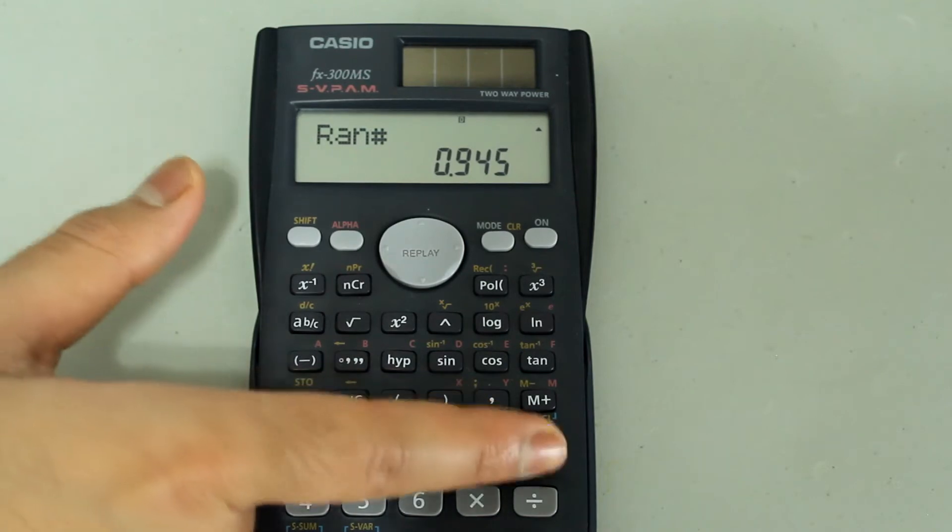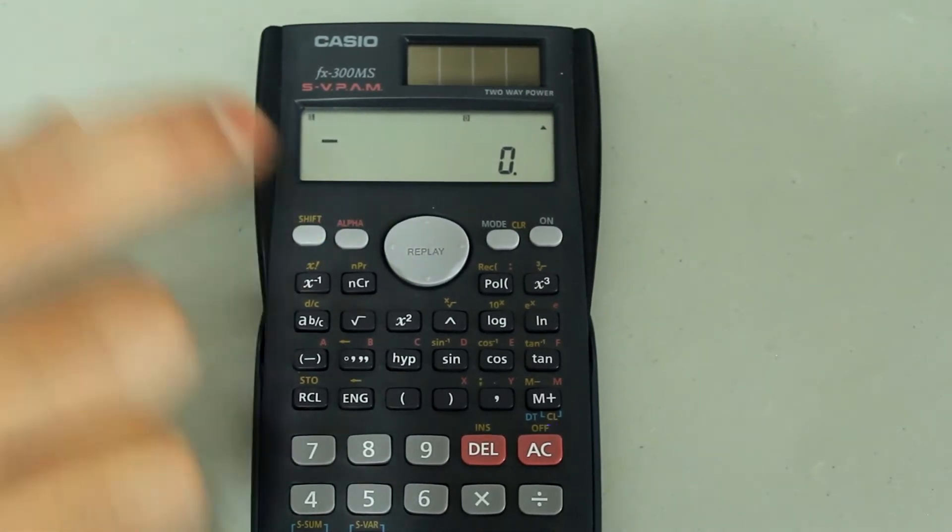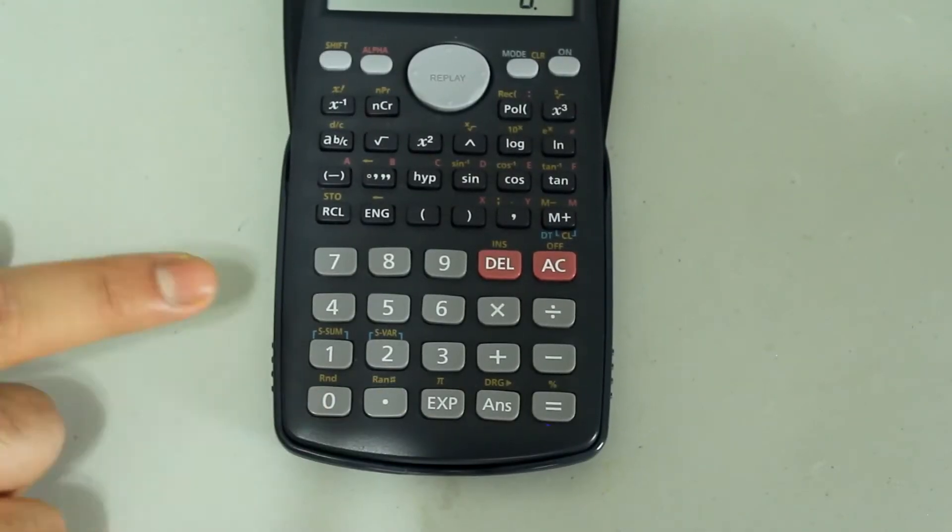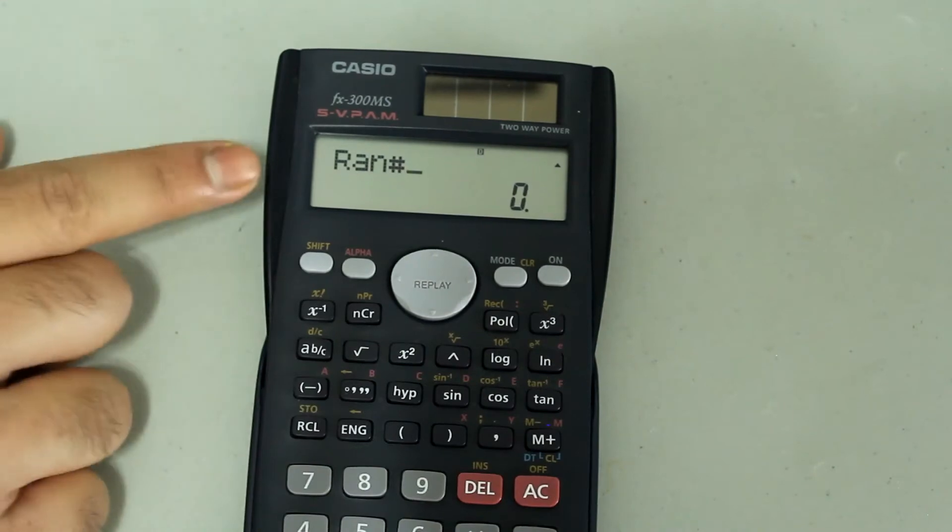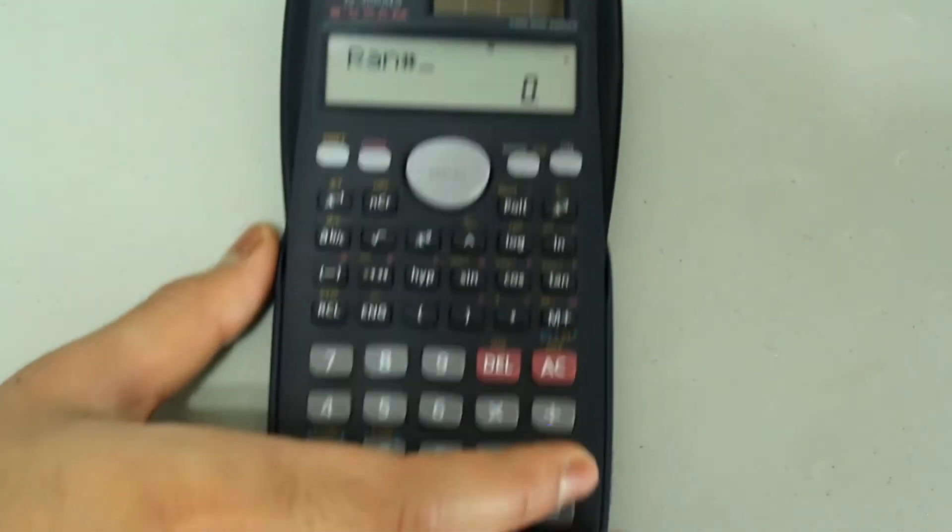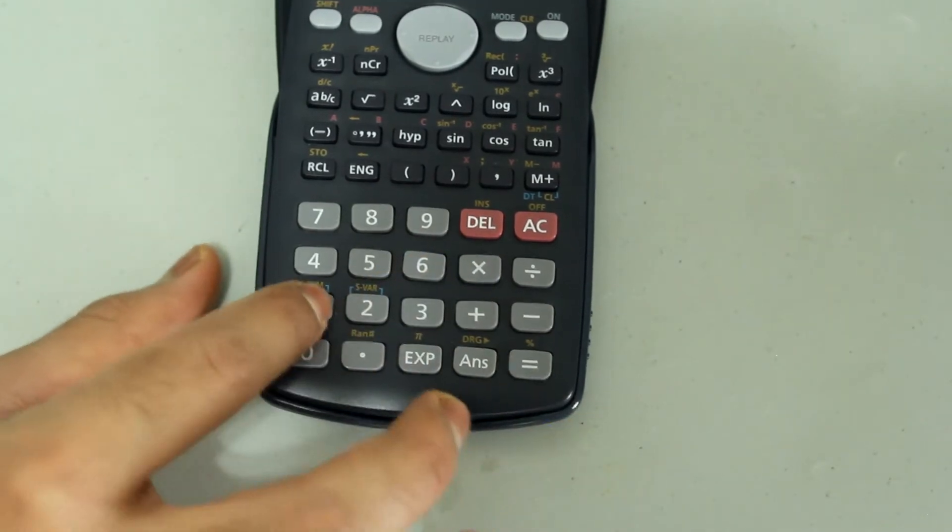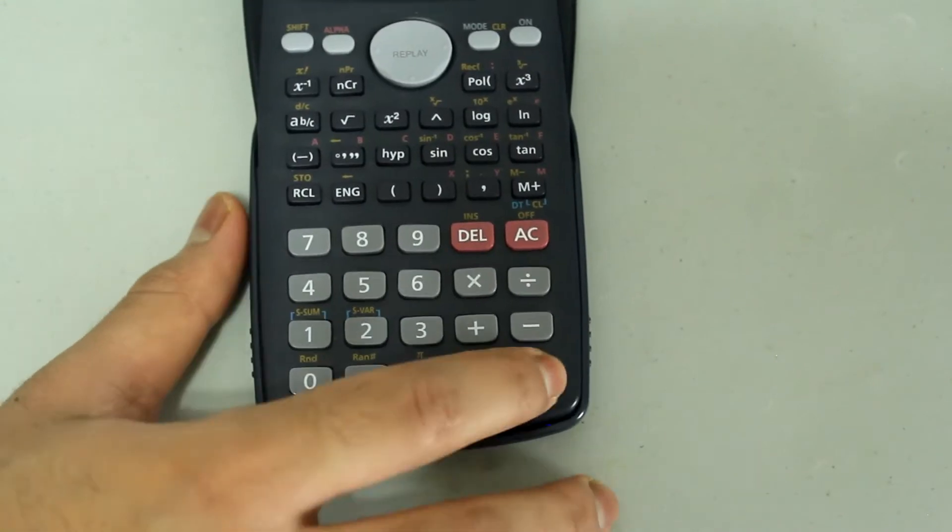Let's clear the screen. Let's say you want to generate a number between 0 and 100. In that case, press shift and then press the decimal button again. This time, once the random number generator comes on the screen, you're going to multiply this by 100. The entry looks like this, and just press equals.